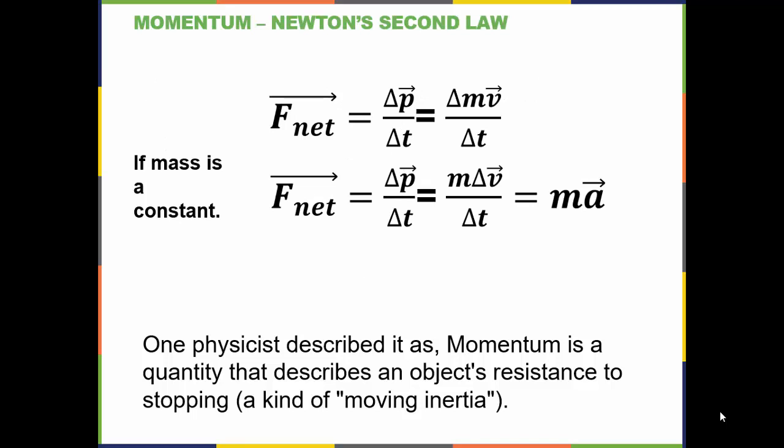If we look at Newton's second law, it can be written in terms of momentum. The net force is equal to the change in momentum divided by the change in time. The change of momentum will be the change in mass times velocity. If the mass is constant, then it's equal to the mass times the change in velocity over the change in time. But the change in velocity over the change in time is just the acceleration. So the net force equals the mass times the acceleration if the mass is constant.